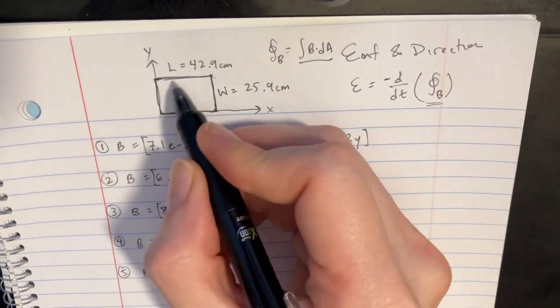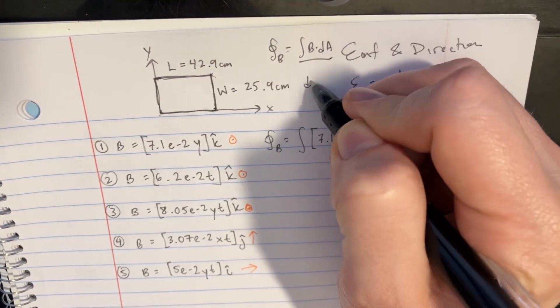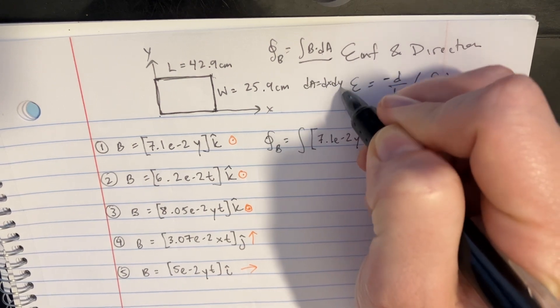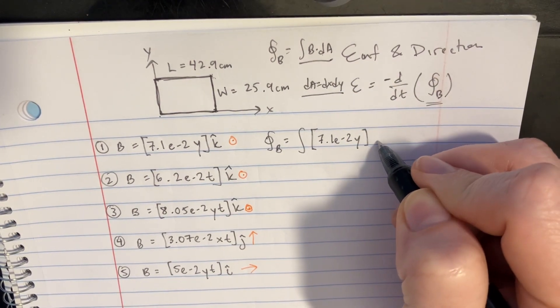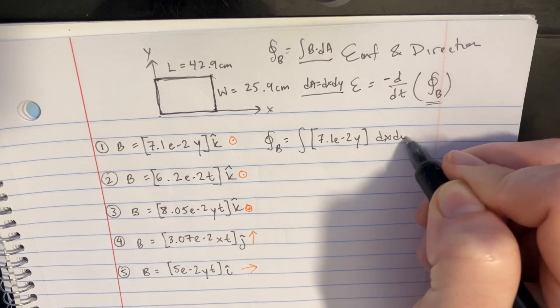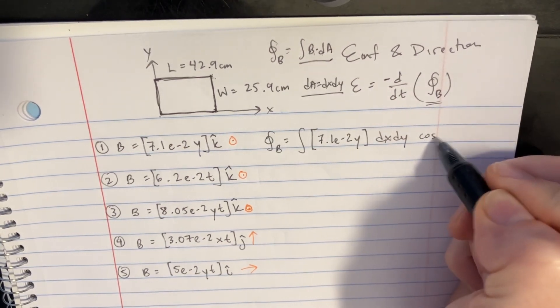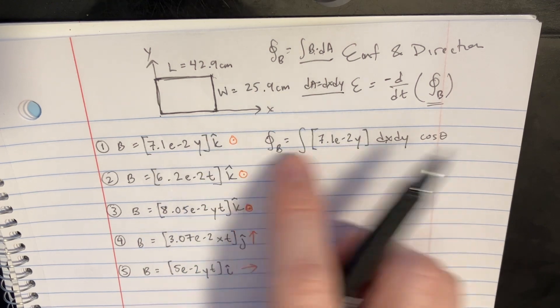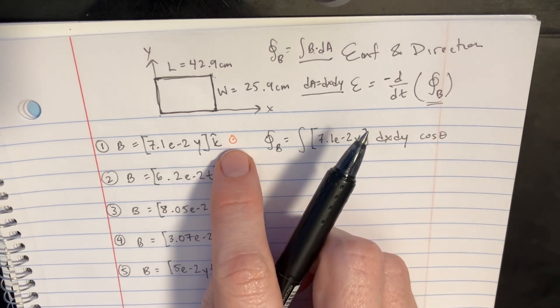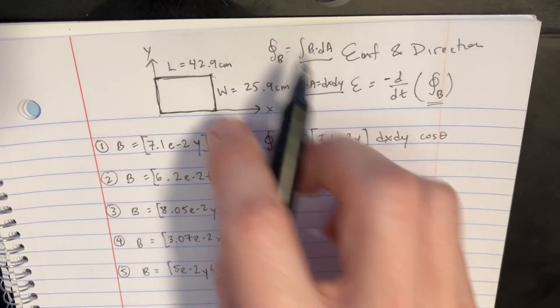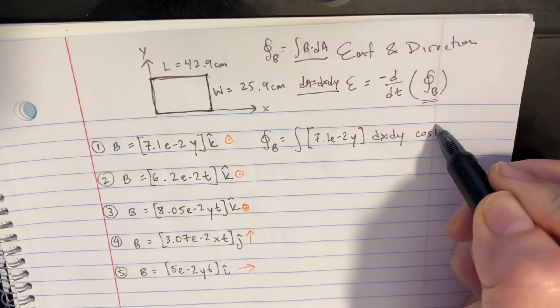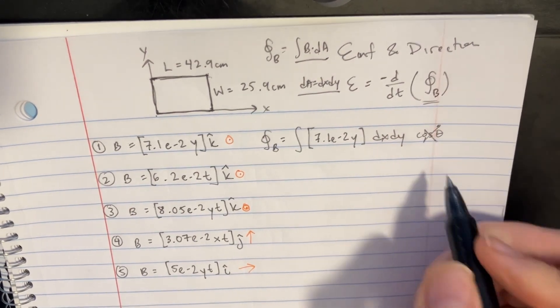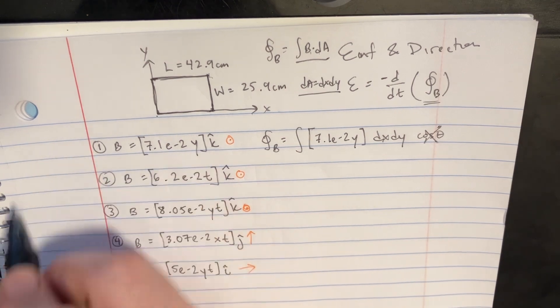And when we dot it, it's just going to be cosine of theta. Now in this case, the cosine of theta between the magnetic field, which is this thing, and the area normal, which is that thing, is going to be 0. So cosine of 0 is 1, so we can get rid of the cosine for that one in all three of these cases.